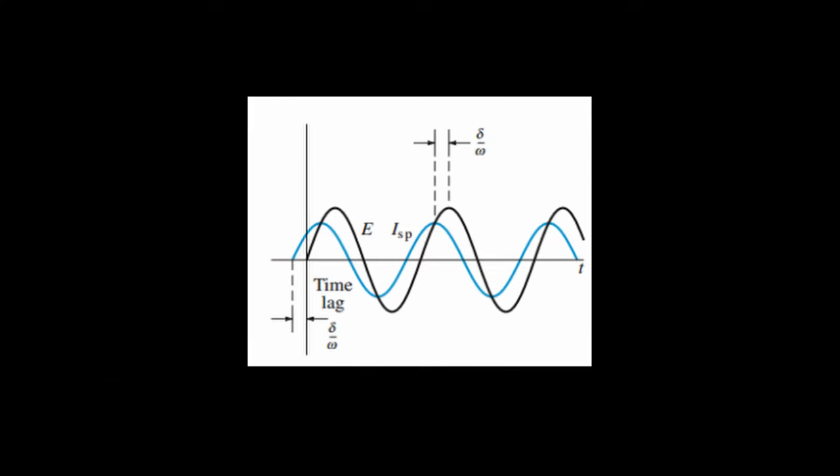We have one more definition to go over, and it's called the time lag, and it's just defined as the delay angle over omega. As shown in this image, all it does is represent the phase shift between the voltage and the steady periodic solution.